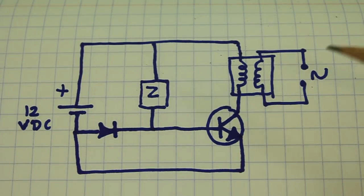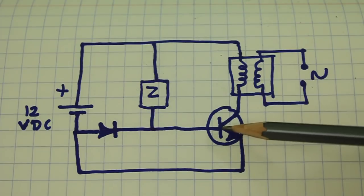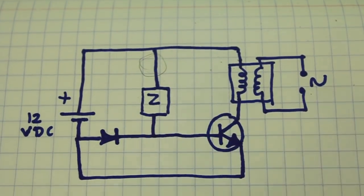If you want to fine-tune the current to the base, you can add a potentiometer at this point.